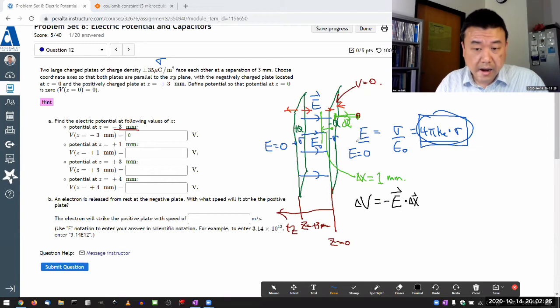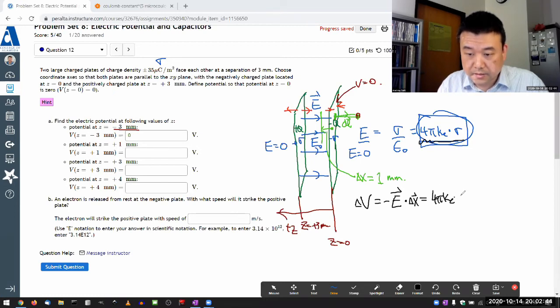Here I know my E dot dx will be negative because electric field points to right, displacement is to the left. So E dot dx will be negative. Multiply that with the minus, I'm going to get a positive answer. So the answer here should be the magnitude of the electric field, four pi ke sigma times the displacement, one millimeter.